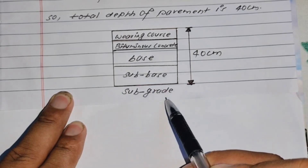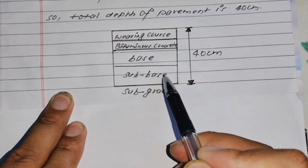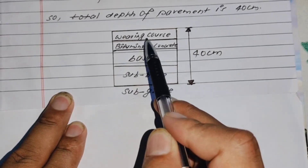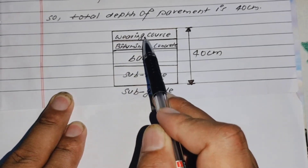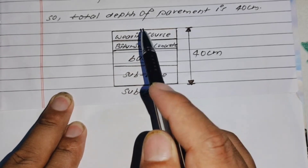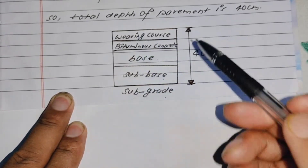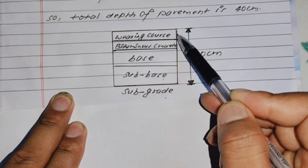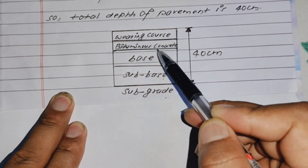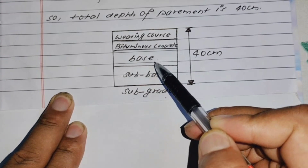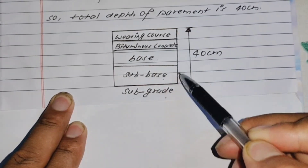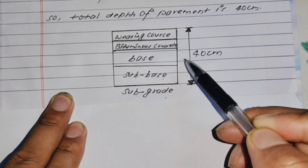So the total depth of the pavement is 40 cm. The pavement consists of the following layers from bottom to top: sub-base, base, bituminous concrete, and wearing course. The total thickness of all these layers combined is 40 centimeters.